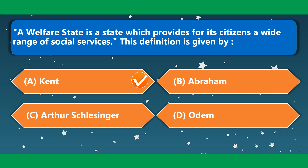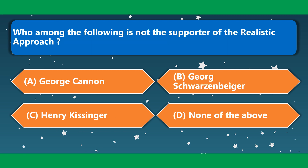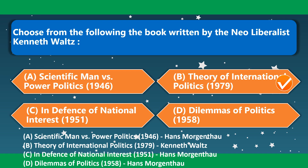A welfare state is a state which provides for its citizens a wide range of social services. This definition is given by Keane. Who among the following is not a supporter of the realistic approach? The correct option is option B — George S. Schwarzenberger. Choose from the following the book written by neoliberalist Kenneth Waltz. The correct option is 'Theory of International Politics,' 1979.